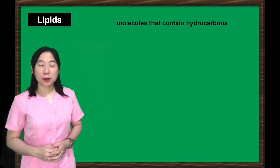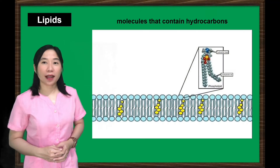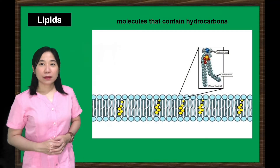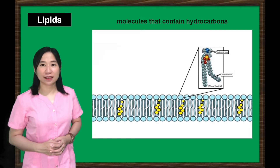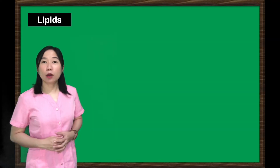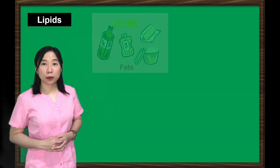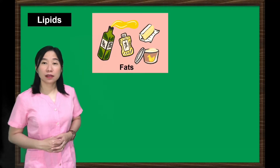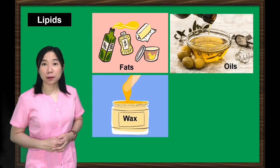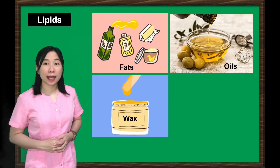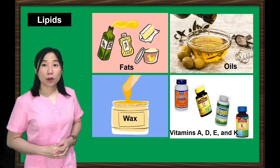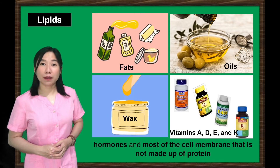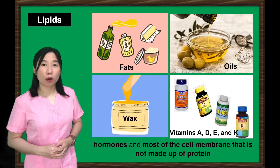Lipids are biomolecules that contain hydrocarbons and make up the building blocks of the structure and function of living cells. Examples of lipids include fats, oils, waxes, certain vitamins such as A, D, E, and K, hormones, and cell membrane that is not made up of protein.